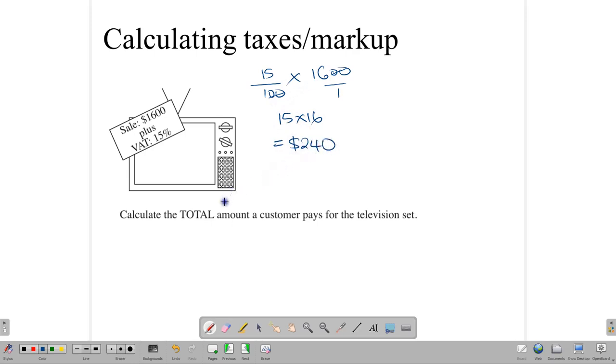And so to find how much the total amount the customer pays, what we need to do then is to add $1,600 plus the 15% VAT, which comes up to $240. And that gives us a total of $1,840.